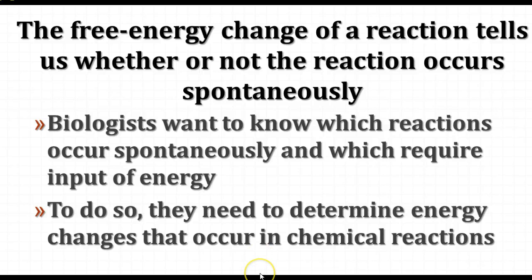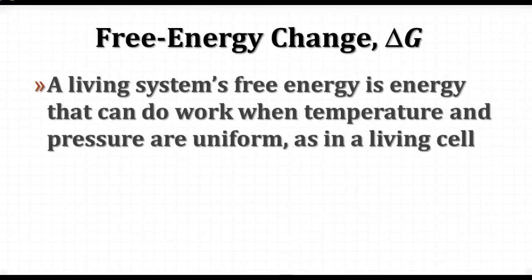One way to predict whether a reaction will occur spontaneously is to look at the free energy change of the reaction, called delta G. This is an important thing to know in terms of understanding how processes in the cell work. The free energy is the energy available to do work when temperature and pressure are uniform. Inside a cell, temperature and pressure are relatively stable, so we're looking at what is released that can do work.